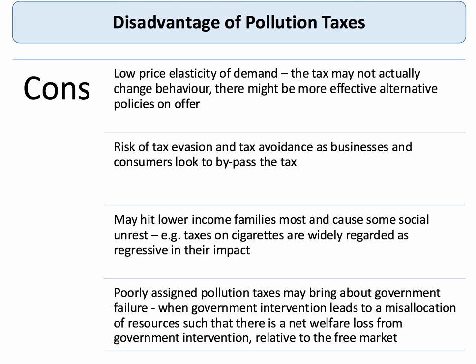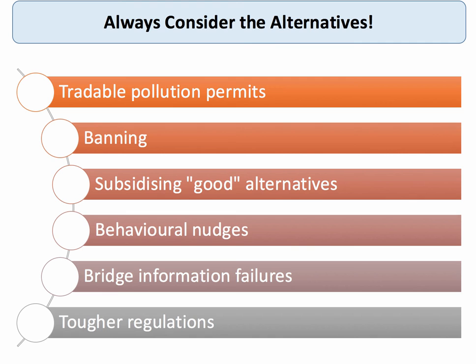Another aspect is that if you get the tax wrong — if it's a poorly assigned or poorly valued tax — it can actually lead to government failure. Government failure is defined as when an intervention with the best of intentions leads to a misallocation of resources such that there's a net welfare loss from the intervention itself relative to the free market. In other words, the intervention might make the market failure worse, not better.